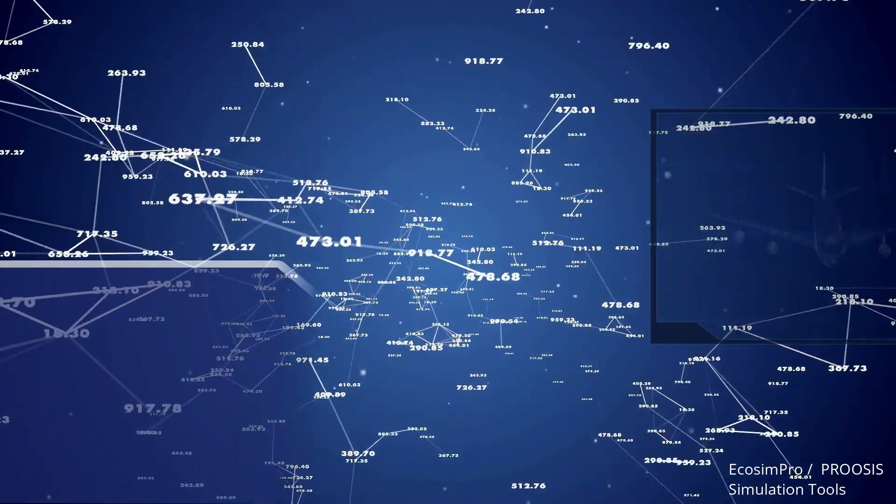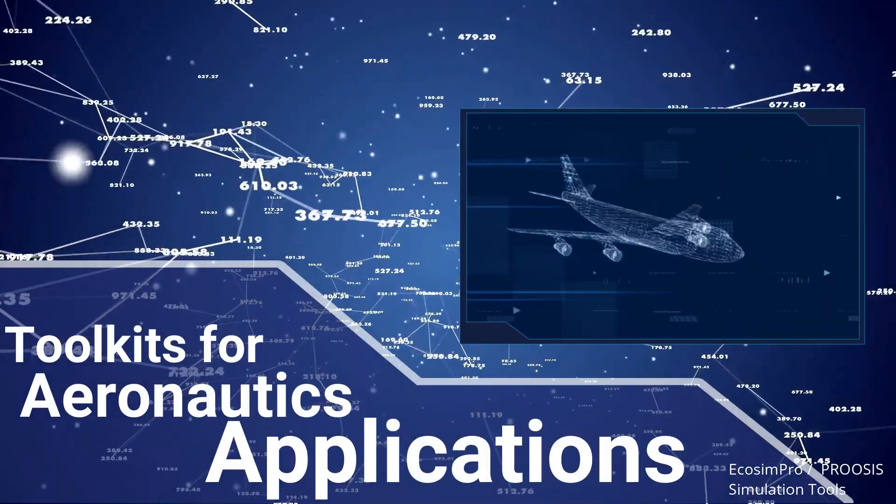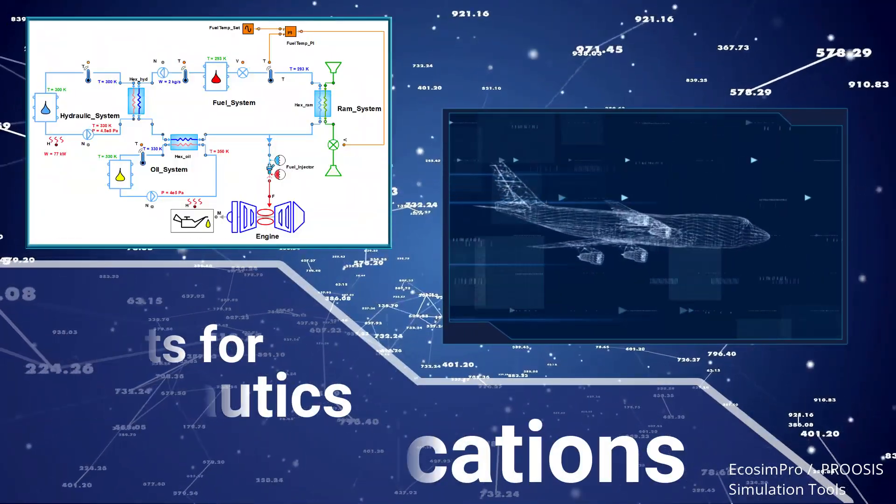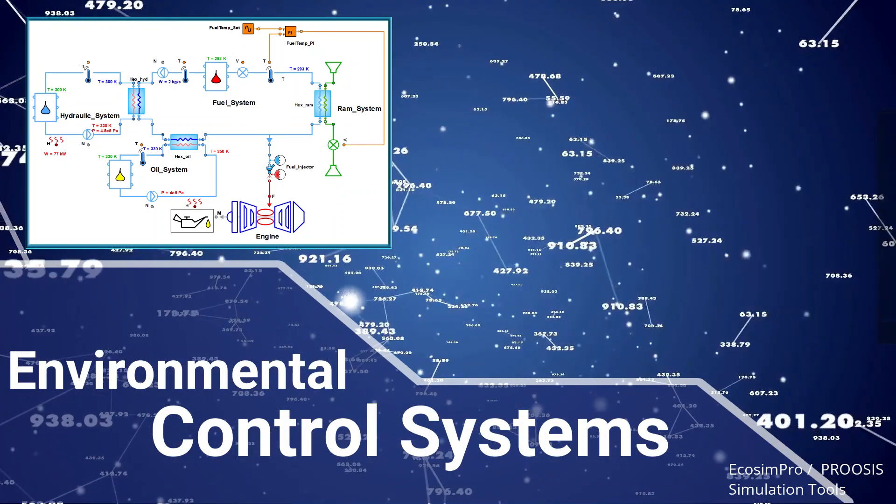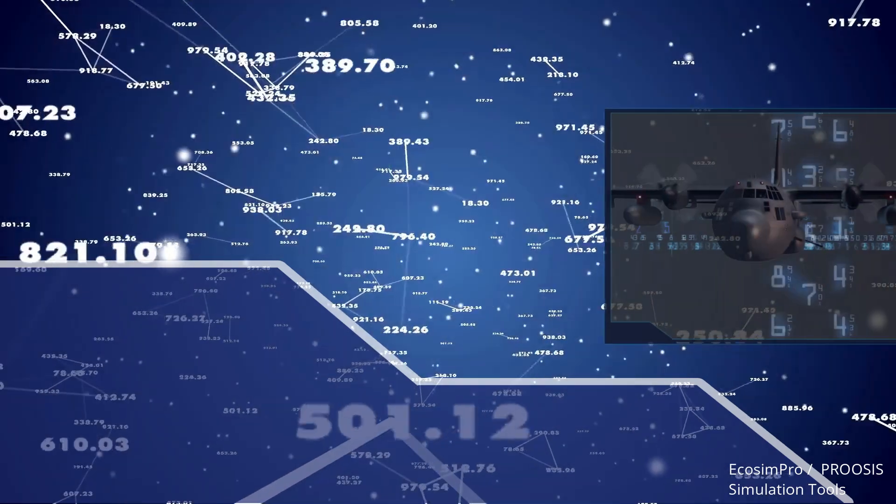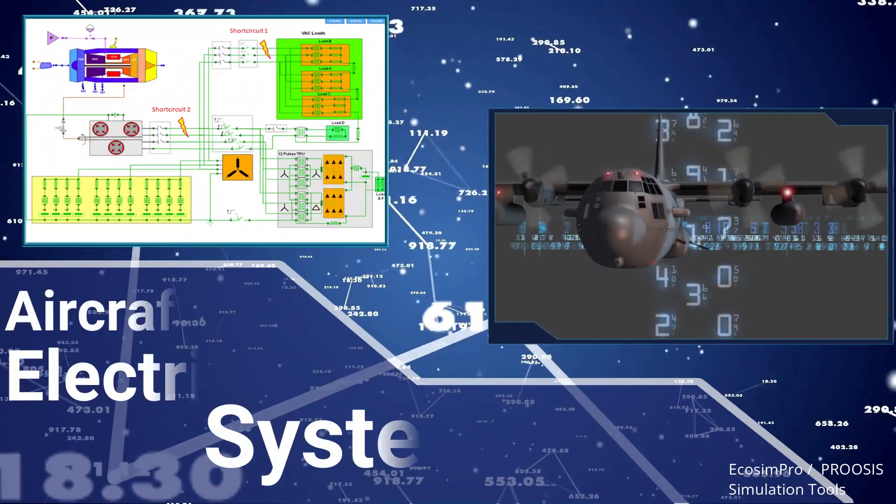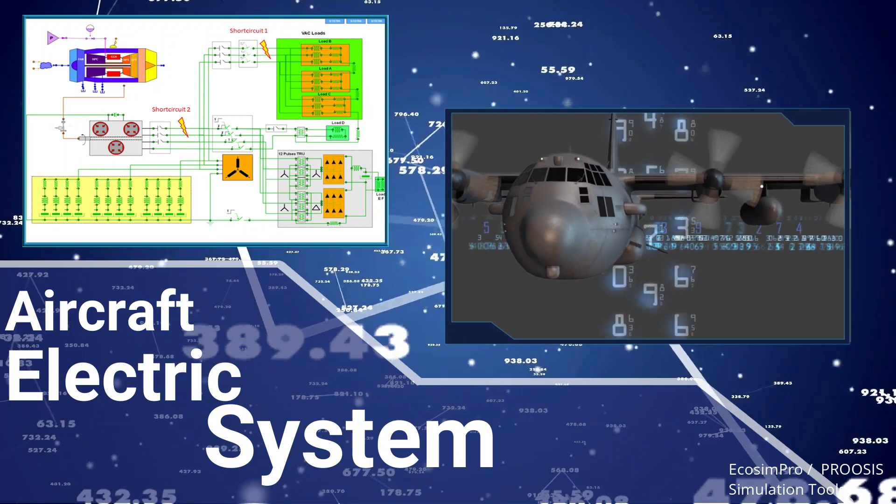In the world of aeronautics, ProSys is used to model different parts of the aircraft, such as the environmental control system that optimizes temperature and humidity in the cabin. Airplane electrical systems can also be modeled to design a better use of the electrical power produced.